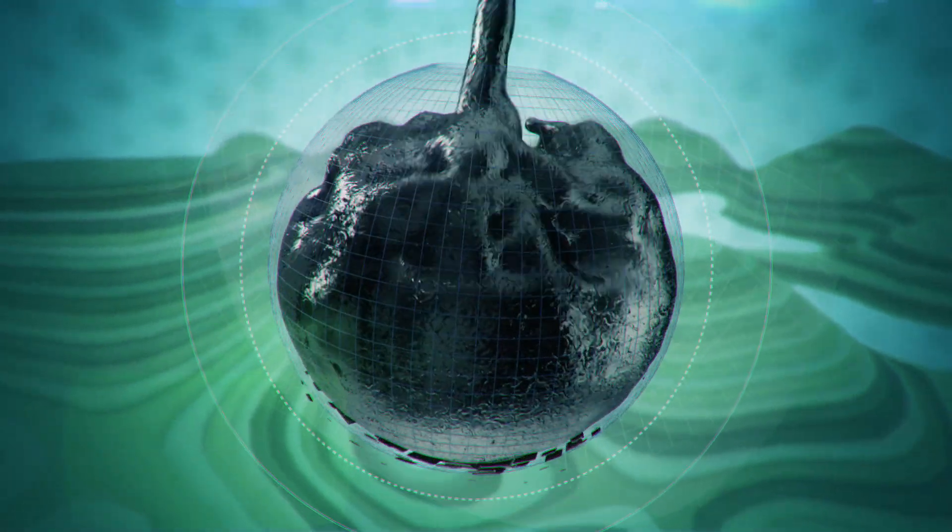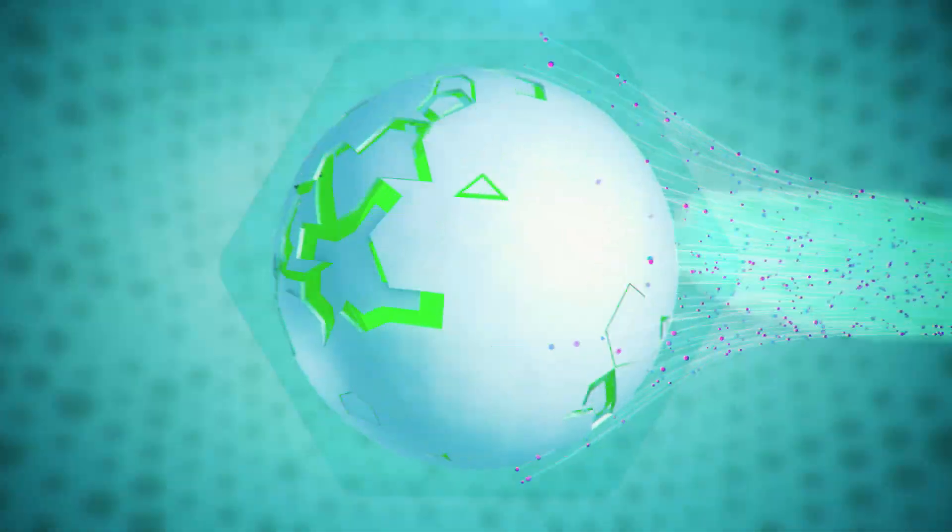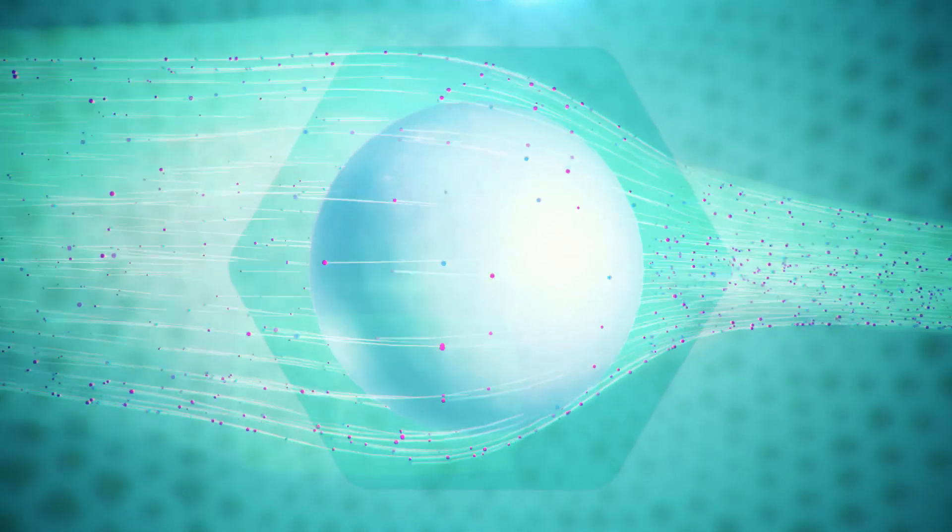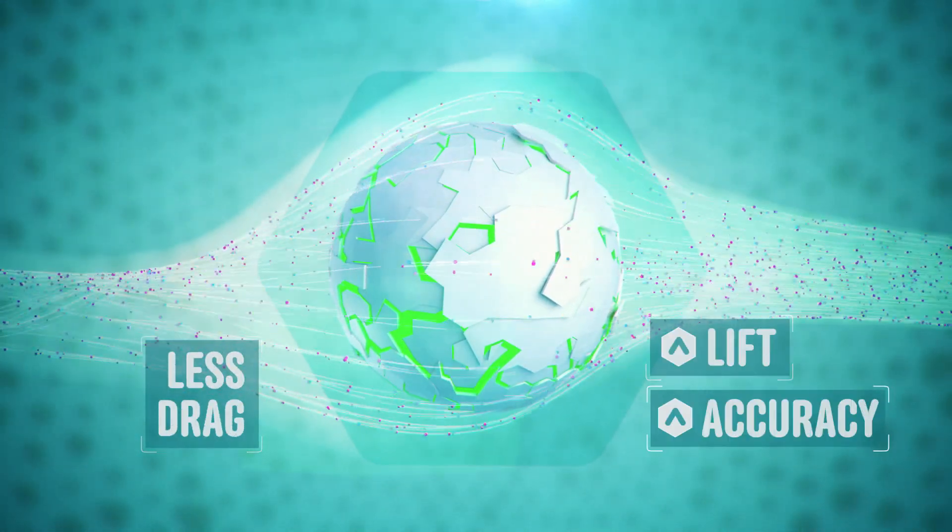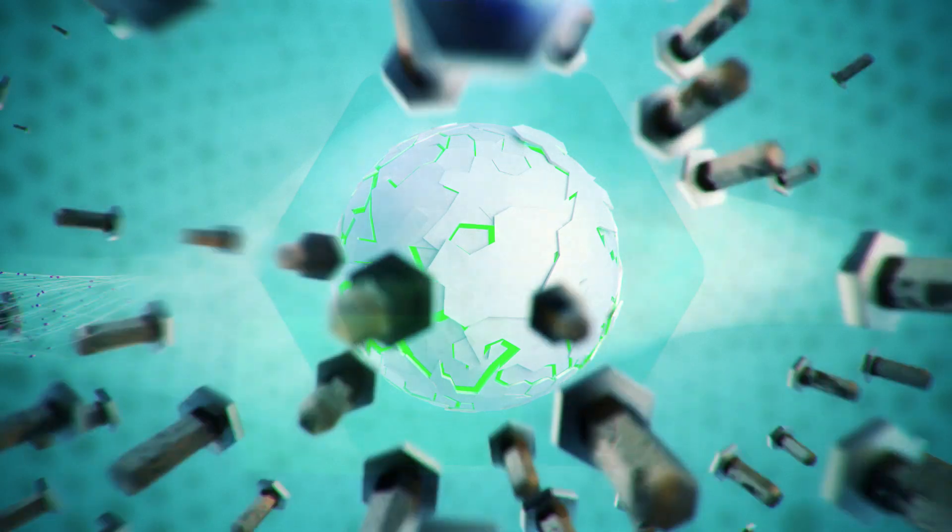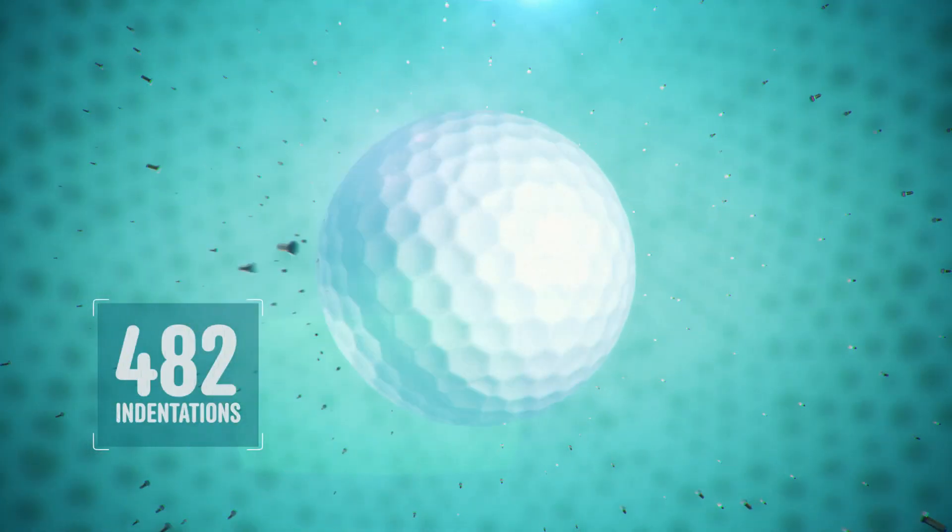Early golfers also discovered that dimpled balls had less drag than smooth ones, thus increasing their lift and accuracy. So today, you'll find up to 482 indentations on the average ball surface.